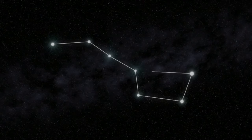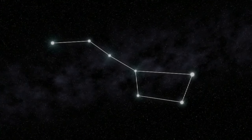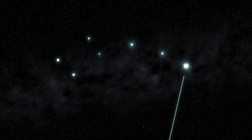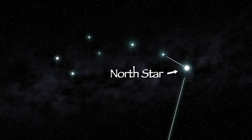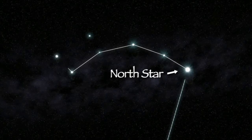The two brightest stars in the bowl point directly to the North Star. The North Star makes the bright northern tip of the Little Dipper.